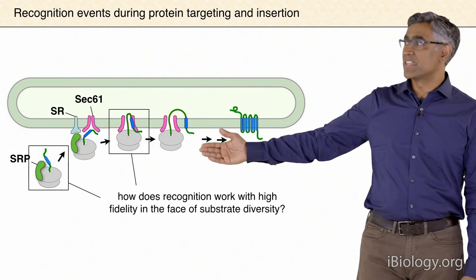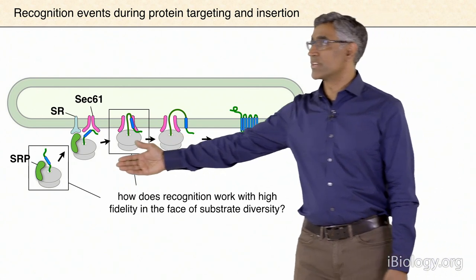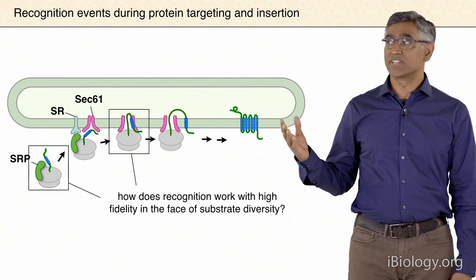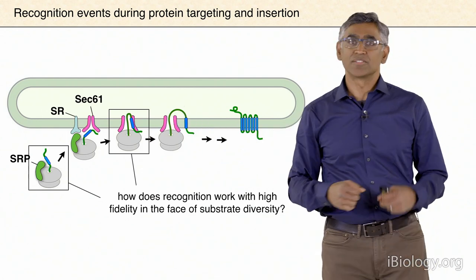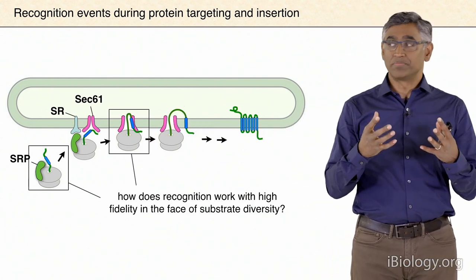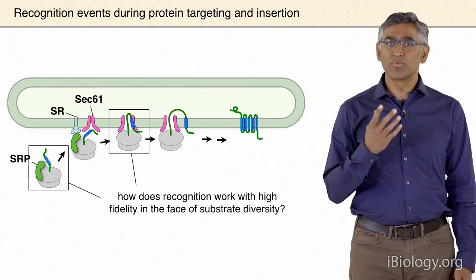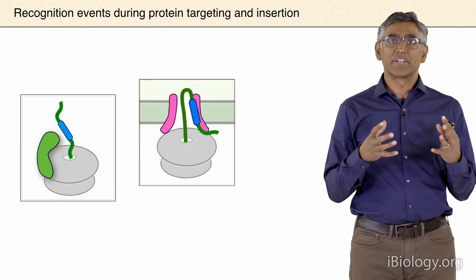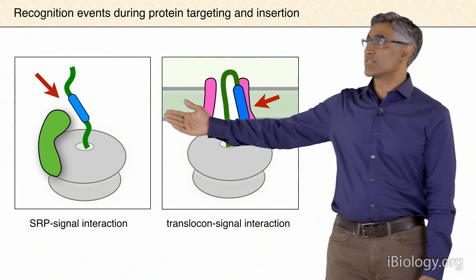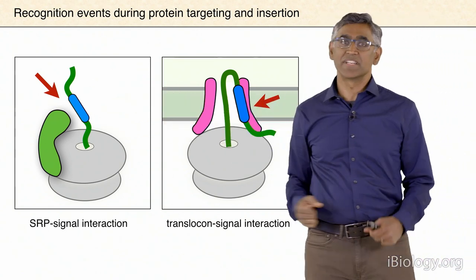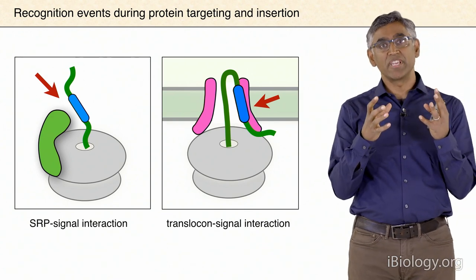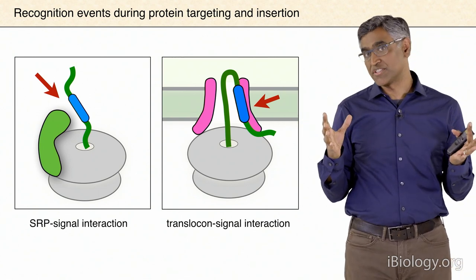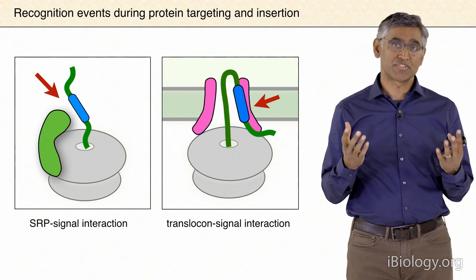What you really want to understand are two key steps. The first is how the signal recognition particle recognizes signal peptides. The second is how the SEC61 channel recognizes signal peptides in order to open. To do this, you want to look at these specific steps with a high degree of resolution—ideally molecular-level insight into the interaction between SRP and the signal peptide and SEC61 and the signal peptide. However, there are a number of challenges to looking at these complexes by high-resolution structural approaches.